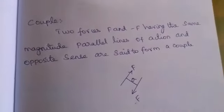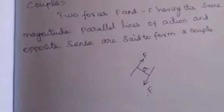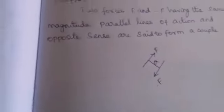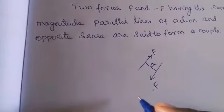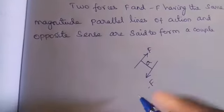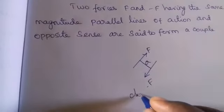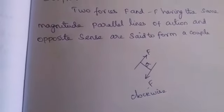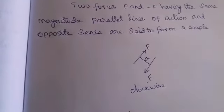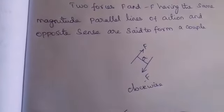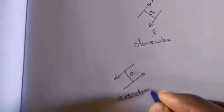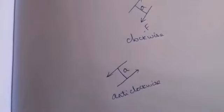Two forces of the same magnitude acting at the same distance form a couple. A couple can be of two types: clockwise couple and anticlockwise couple. A clockwise couple rotates in the clockwise direction, while an anticlockwise couple has the same magnitude and same distance A but rotates anticlockwise.